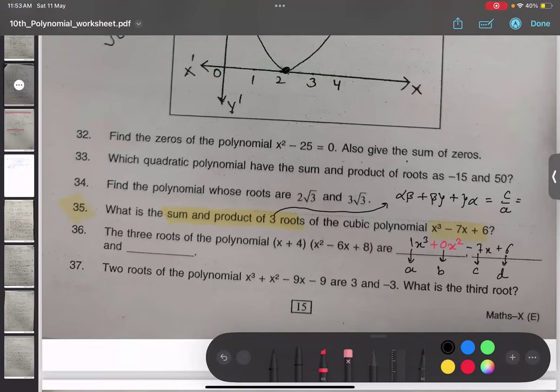Now, what is the c value? Minus 7 by 1. So, my answer to this question is minus 7.